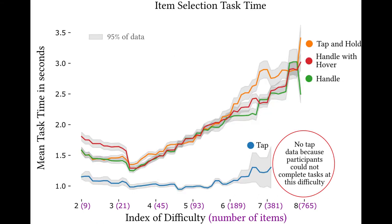For task times, users took about 1.2 seconds to do a tap selection and 1.4 to 2.3 seconds using the other techniques for a comparable range of task difficulty. For difficulties that were not reached using tap, participants took up to 3 seconds using the visual feedback techniques.